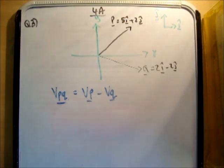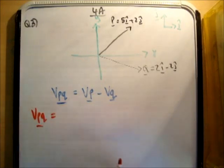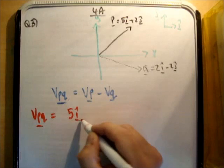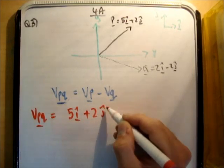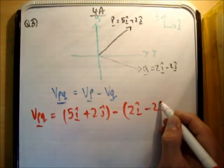So let's work out what V, P, Q is. So it's going to be V, P, Q. And we need to get V, P. So that is 5I hat plus 2J hat minus 2I hat minus 2J hat.